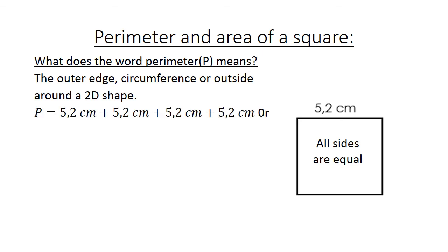Perimeter equals 5.2 cm plus 5.2 cm plus 5.2 cm plus 5.2 cm, or only 5.2 cm times 4. We have 4 sides. And perimeter equals 20.8 cm.